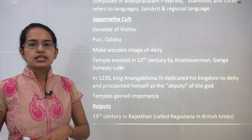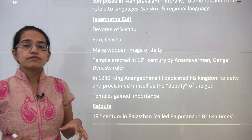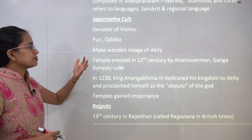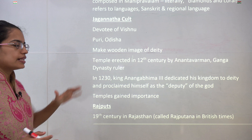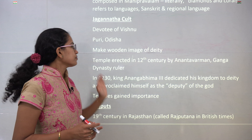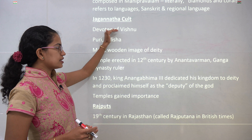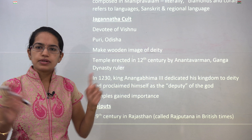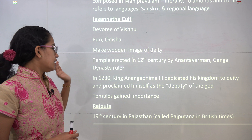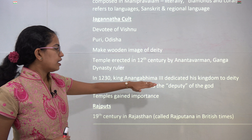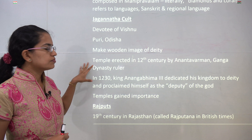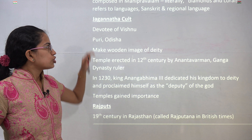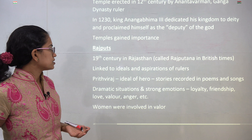The next is the Jagannath cult, which worships the statue of Jagannath in Puri, Odisha. Jagannath means Vishnu, so they are devotees of Vishnu. They mainly make wooden images of the deity. The temples were erected in the 12th century by Anantavarman from the Ganga dynasty, who built the temple of Jagannath Puri. In 1230, king Anangabhima II dedicated his kingdom to Jagannath, saying they were just deputies to the god Jagannath. Slowly and gradually temples gained importance during this period.